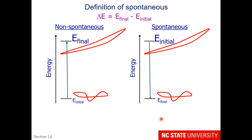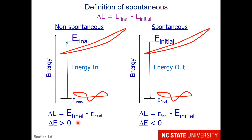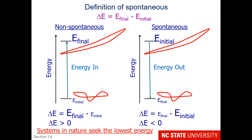Looking at the energy change: non-spontaneous changes have energy going in, so the final energy is greater than the initial energy, giving a positive energy change. Spontaneous reactions go from high initial to low final energy. In chemistry, energy changes are always final minus initial. So if you take the final energy minus the higher initial energy, you get a negative energy change. Spontaneous reactions have negative energy changes, and systems in nature will seek the lowest energy.